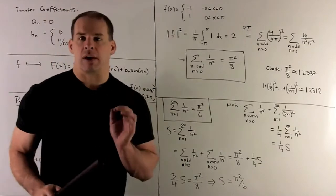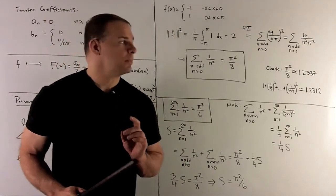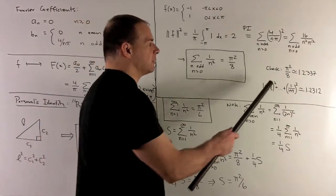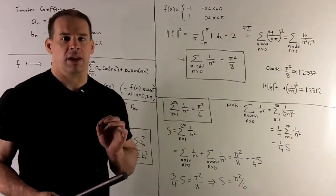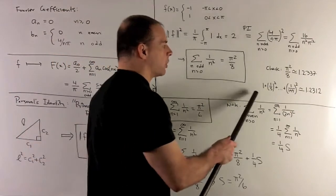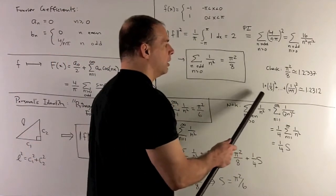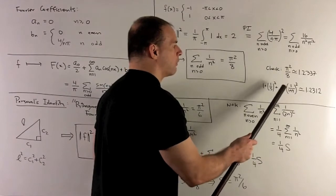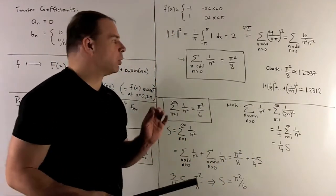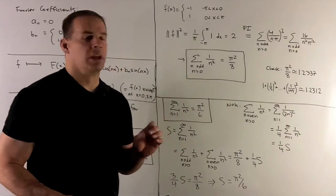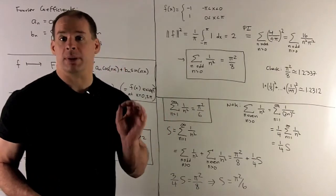Now, that result seems pretty unlikely. So, let's just check. If I put pi squared over 8 into my calculator, we get 1.2337. If I go to the computer, sum up the first 100 terms, this is going to be 1 plus 1 third squared, all the way up to 1 over 199 squared. Sum it up, what do we get? We get 1.2312. So, that's in the ballpark, so I believe this now.